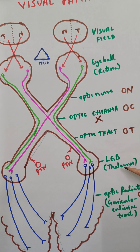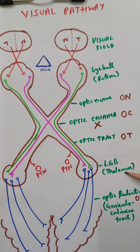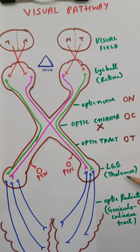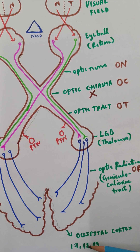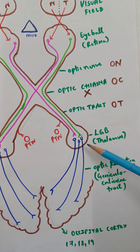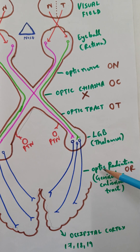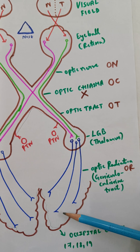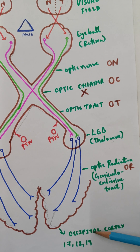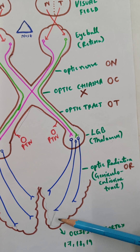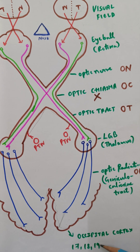The lateral geniculate body is part of the thalamus, which is a subcortical relay center — all sensations traveling from the periphery to the cortex relay in the thalamus, except olfactory information. From the lateral geniculate body, the third-order neuron carries impulses to the occipital cortex — areas 17, 18, and 19. These radiations are called optic radiations, also known as the geniculocalcarine tract, because they travel to the calcarine sulcus. Area 17 is the primary visual cortex; areas 18 and 19 are visual association areas.